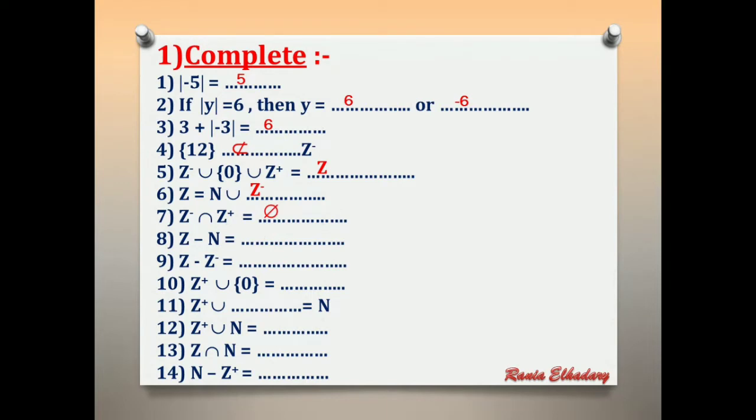Number 8: Z difference N. If we subtract the natural numbers from the integers, what is the answer? The answer is Z negative. Number 9: Z difference Z negative. If we subtract Z negative from the integers, the answer is natural number.